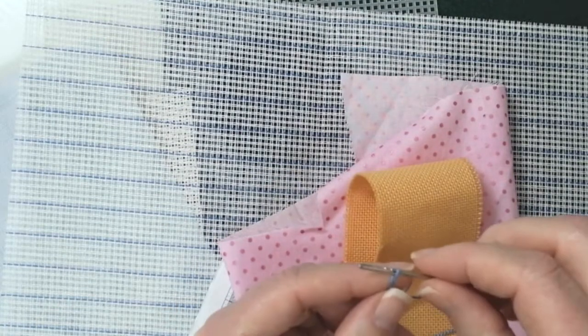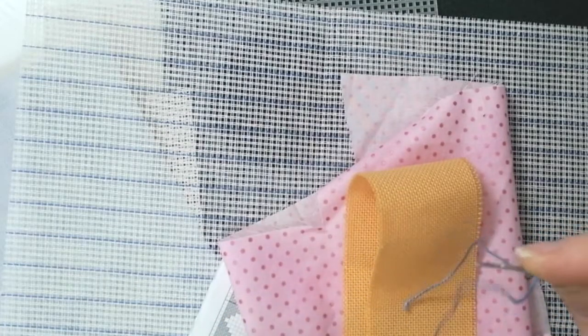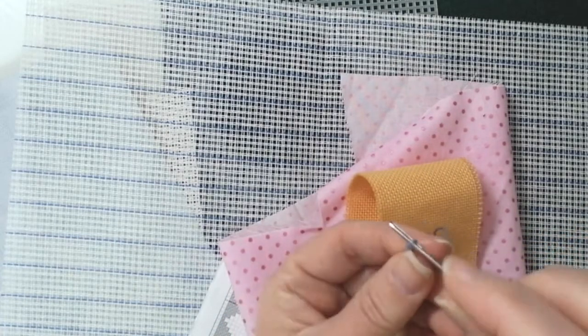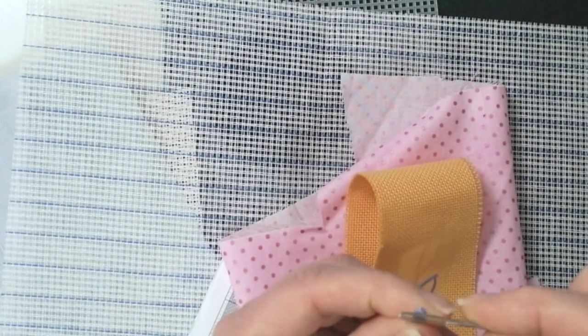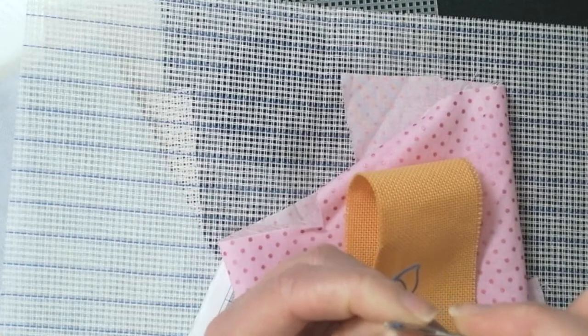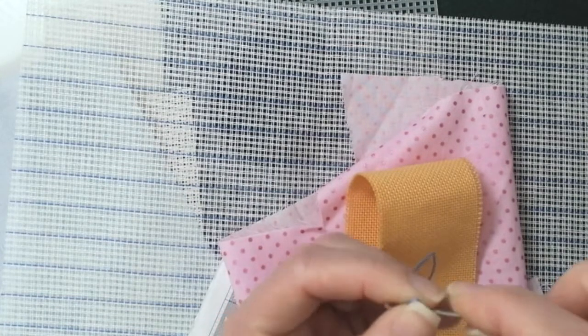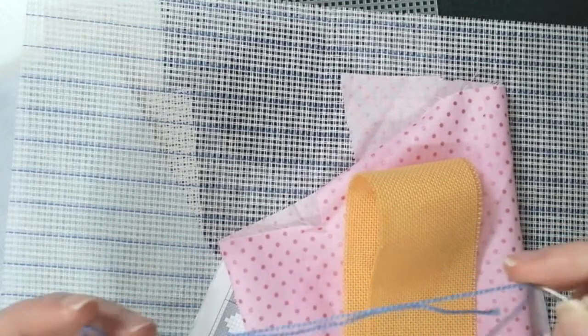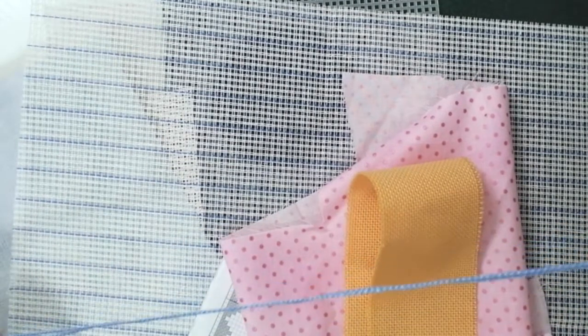First thing is you're going to thread your needle. The way I do this is I create a loop, I grab the needle and put it inside that loop, pull it tight, and then I take the eye of the needle and place it above that loop. And if it's really tight, you might want to rock it back and forth. Pull that through. That's a basic threading the needle.